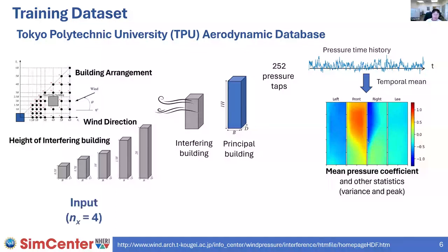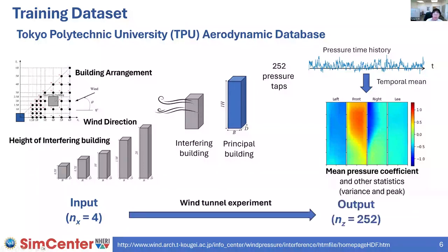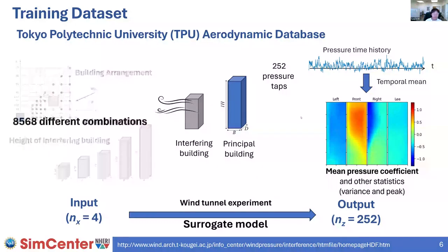In this setting we have an input dimension of four representing different configurations — building arrangement requires two parameters, X and Y coordinate — and our output of interest has dimension of 252 representing each pressure tap location. We want to reproduce results from wind tunnel experiments using a surrogate model. As a side note, the experiments were repeated 8,500 times representing different configurations of these four parameters.